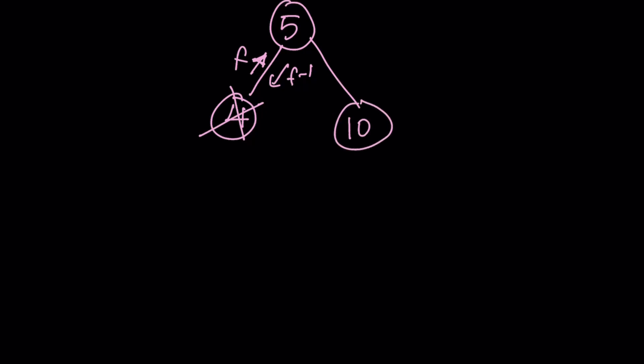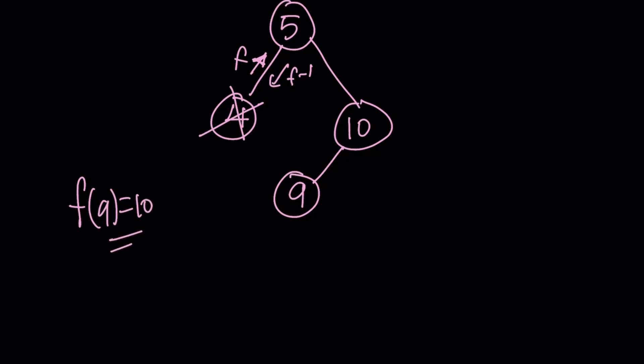10 is even, so we can subtract 1, which gives us 9. You can check going back: f of 9 is 10 because you add 1 to an odd number — so this is valid. Or you can double 10, which gives you 20. That's also fine because if you cut 20 in half you get 10. So the rule is: if you have an odd number just double it; if you have an even number, double it and also subtract 1 to get the previous numbers.